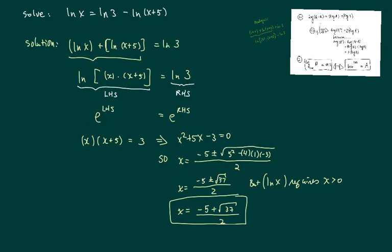Now I'm taking e to the left hand side and the right hand side, the reason I want to do that is get rid of the natural log on both sides. Then on the left hand side I have x times x plus 5 equal to 3, that's a pretty easy second order polynomial using quadratic equation, I can solve it.